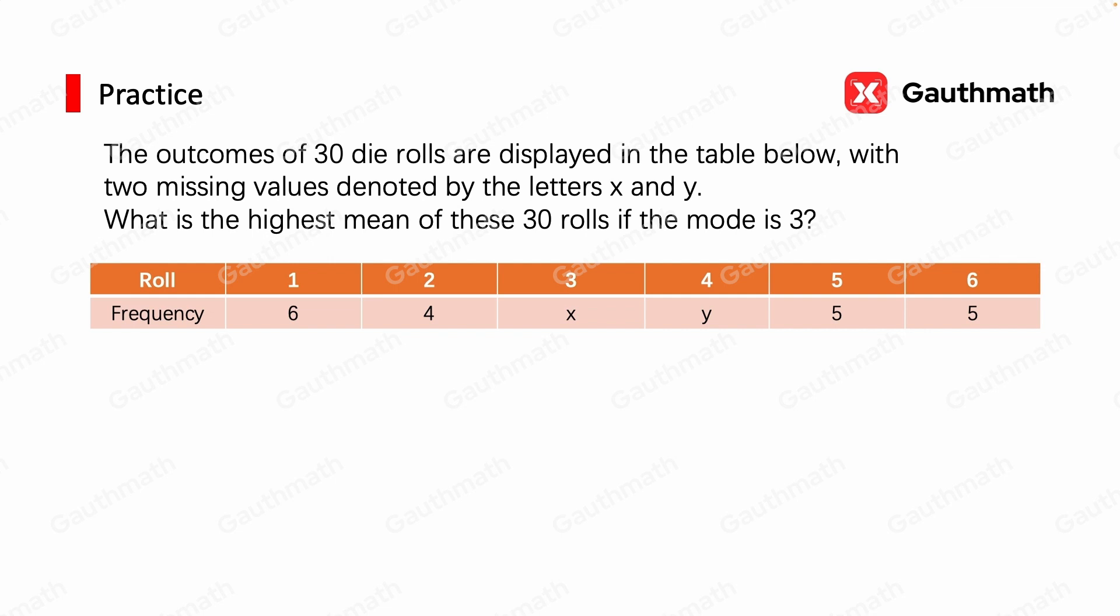Let's try to interpret the table first. The word frequency means how many times the number appeared. In our case, we have six 1s, four 2s, x 3s, y 4s, five 5s, and five 6s.